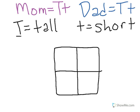And I've already shown that capital T represents a tall height, so that's the dominant trait. Lowercase t represents a short height, which is the recessive trait.